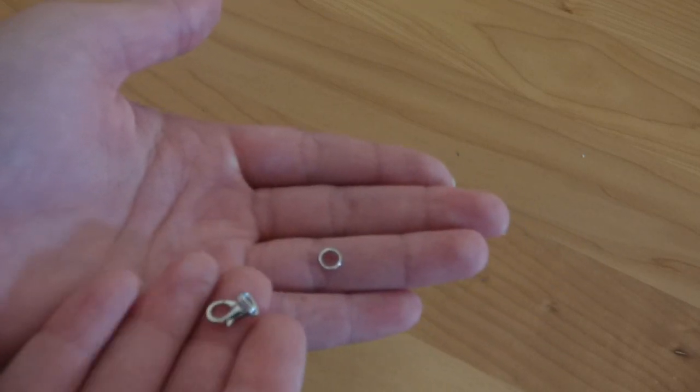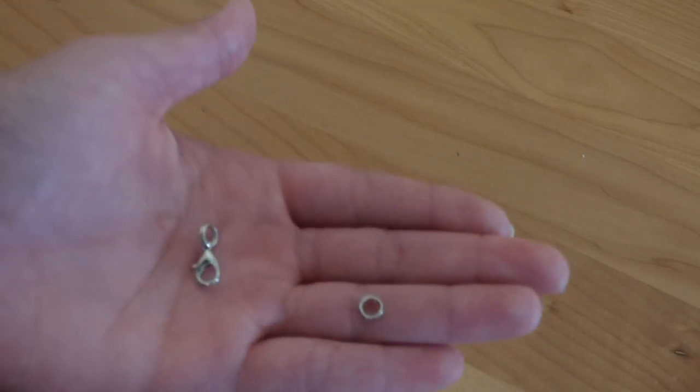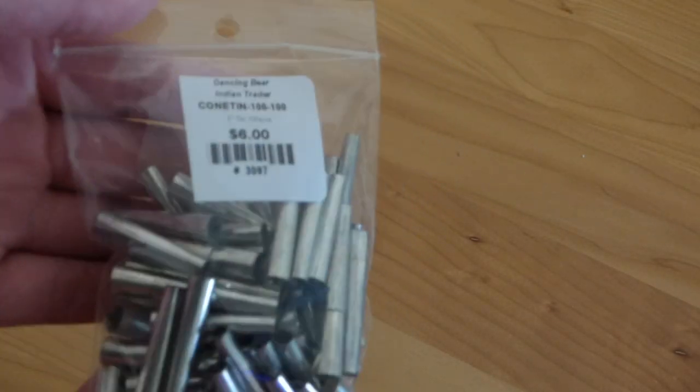So as you can see, I've already attached the split ring to the lobster clasp. You're also going to need cones. These are 1 inch cones.